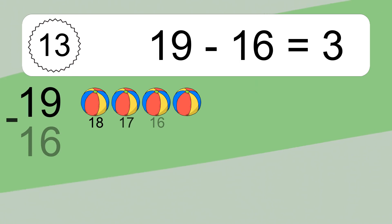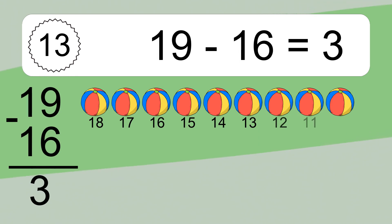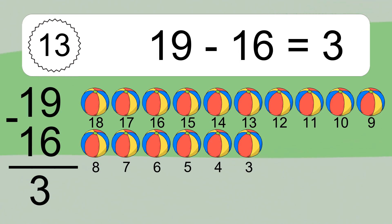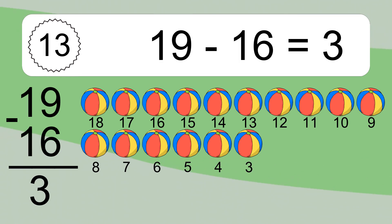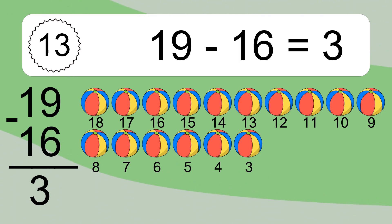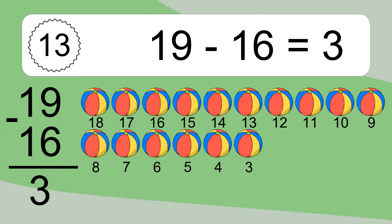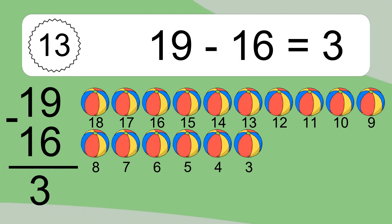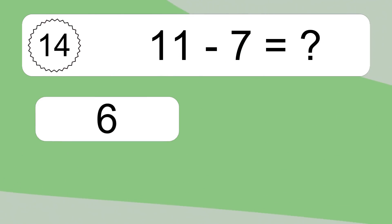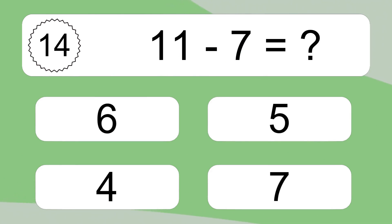19 minus 16 equals 3. Let's count it: 18, 17, 16, 15, 14, 13, 12, 11, 10, 9, 8, 7, 6, 5, 4, 3. 11 minus 7 equals what?